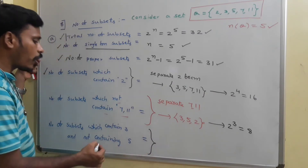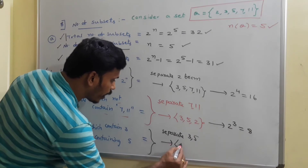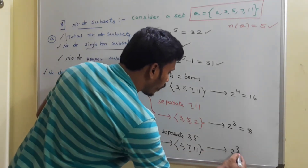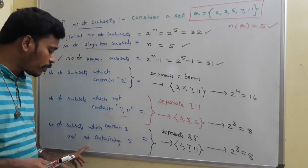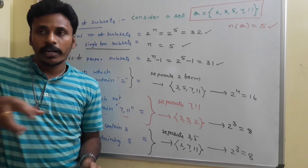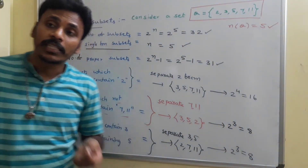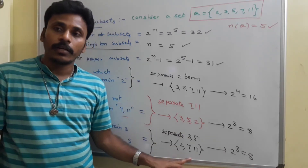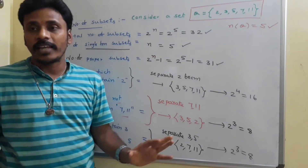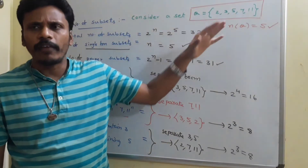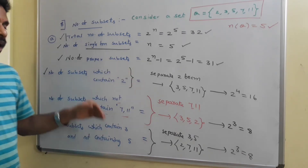The next question is the number of subsets which contain 3 but do not contain 5. First, separate both 3 and 5. The remaining elements are {2, 7, 11}, giving 2 power 3 = 8 subsets. Since we don't want 5, throw it out. Now take 3 and write it into each of those 8 subsets. The newly formed subsets are the required subsets which contain 3 but not 5, so the answer is 8.